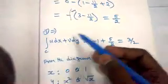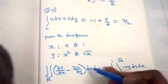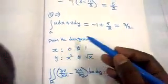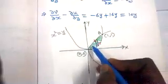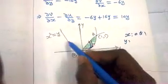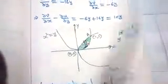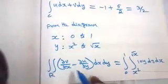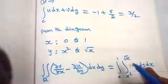Now finding the RHS: the double integral over R of (∂v/∂x minus ∂u/∂y) dx dy. Setting the limits using a vertical strip from the diagram: x ranges from 0 to 1; y ranges from x² to √x (from parabola x²=y at the bottom to y²=x, i.e., y=√x at the top). The integrand is 10y. The RHS is the integral from 0 to 1, integral from x² to √x, of 10y dy dx.